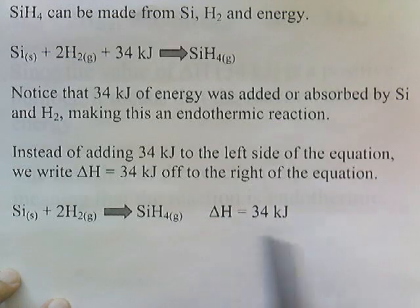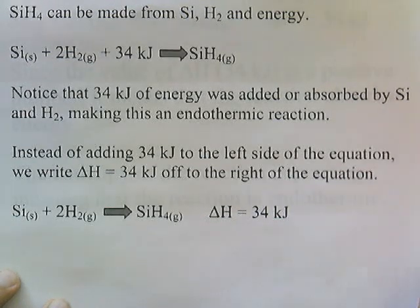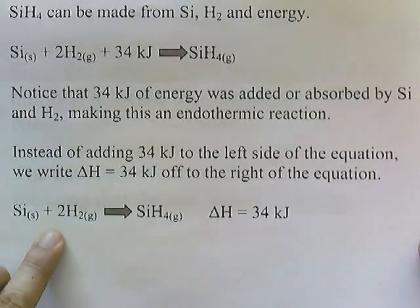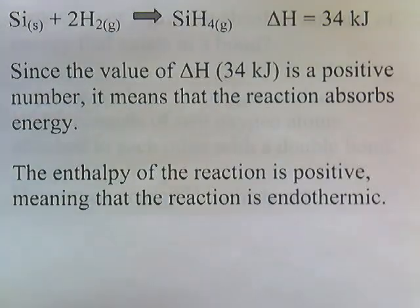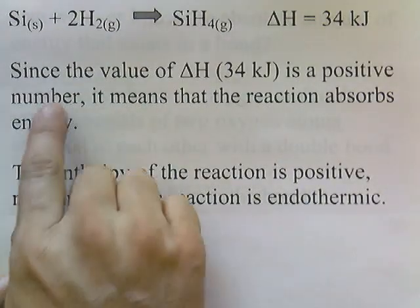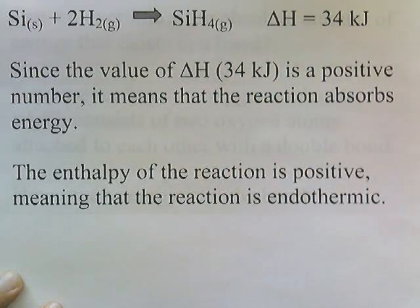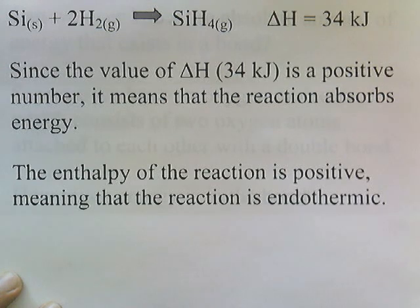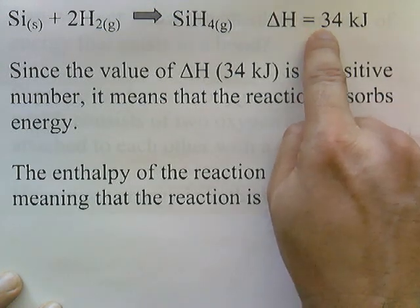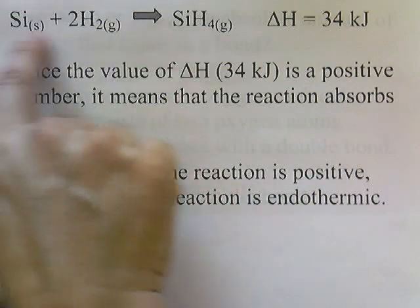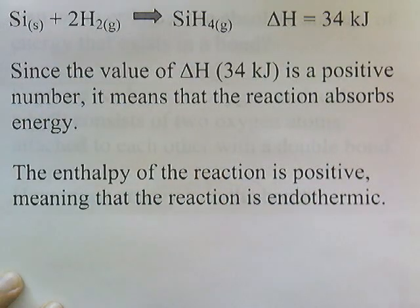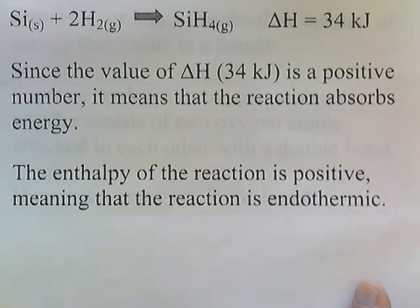This indicates that that amount of energy has been absorbed in the reaction. Since the value of delta H, 34 kilojoules, is a positive number, it means that the reaction absorbs energy. This positive number means that energy is being added on the left side. So the enthalpy of the reaction is positive, meaning that the reaction is endothermic.